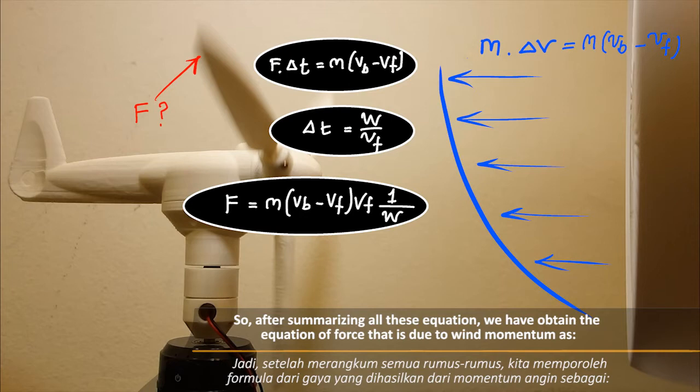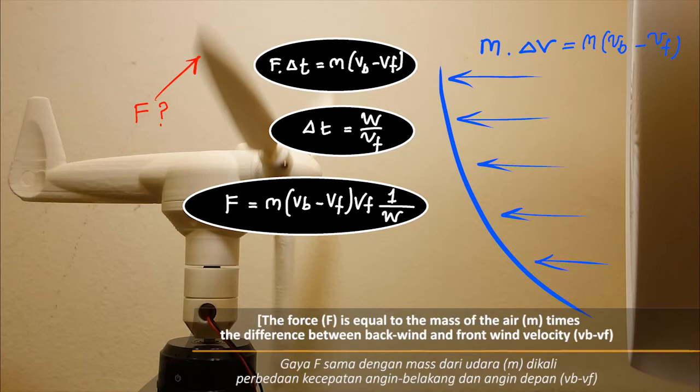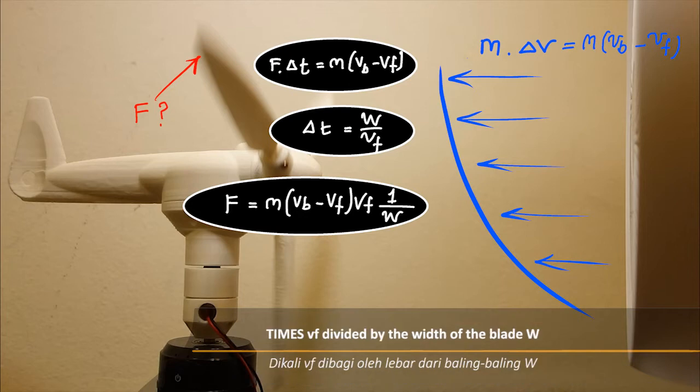So after summarizing all these equations, we have obtained the equation of force that is due to the wind momentum: the force f is equal to the mass of the air, m, times the difference between back wind and front wind velocity, vb minus vf, times vf divided by the width of the blade, w.